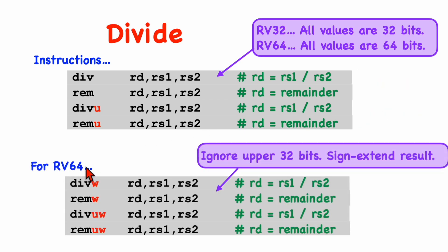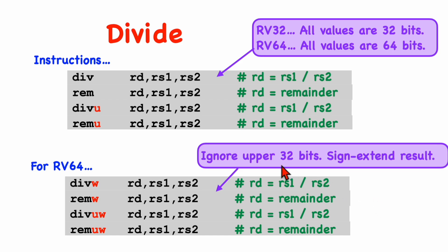If you have an RV64 machine, we've got four additional instructions. These instructions will operate on whatever the register size is, so for RV64 they take 64-bit operands and produce a 64-bit result. We also have additional word-sized operations where it's the same opcode except there's a W appended. These will perform the operation using 32 bits — that is, they will ignore the upper 32 bits of the operands and only look at the lower 32 bits — and they'll produce a 32-bit result that is then sign-extended and placed in the destination register.